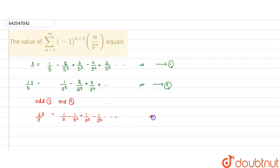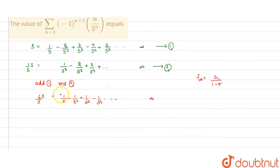As we know, the sum of an infinite GP is first term upon 1 minus common ratio. Here, the first term is 1 by 5, and 1 minus minus 1 by 5, where minus 1 by 5 is the common ratio. This will come as 1 by 5 times 5 by 6, which equals 1 by 6.